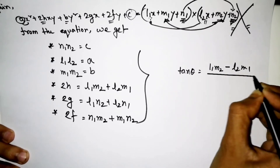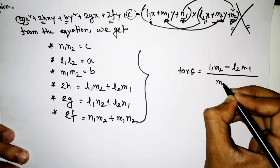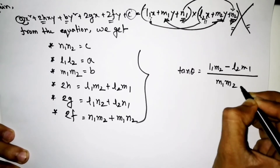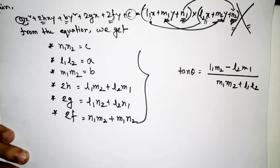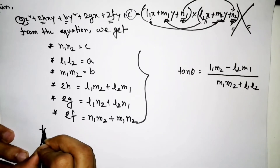Also, n₁n₂ = C. So we have l₁l₂ = A, m₁m₂ = B, and n₁n₂ = C as the product relations.